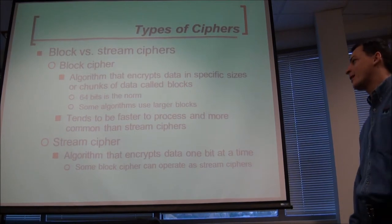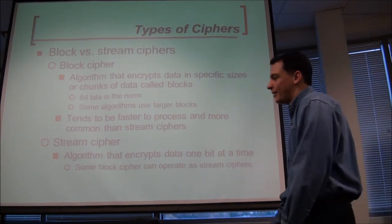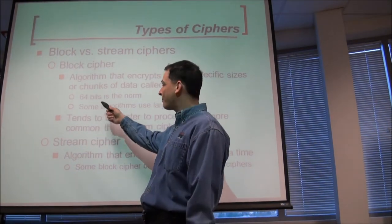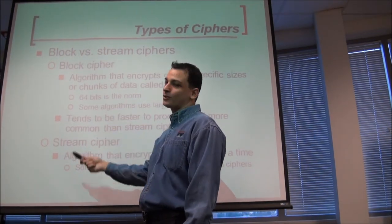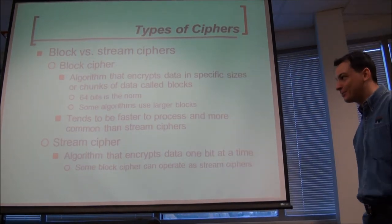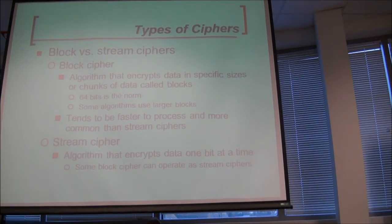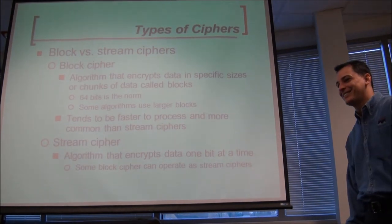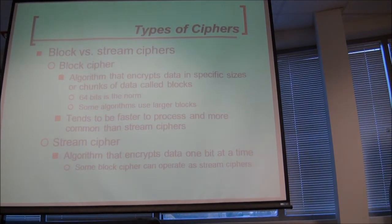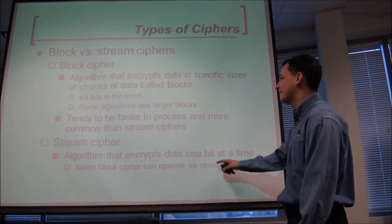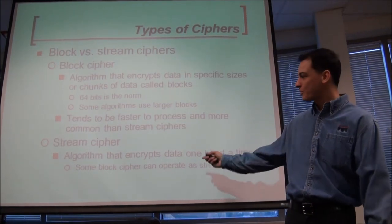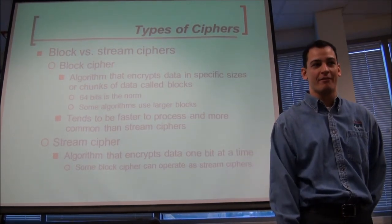Block ciphers operate on a larger increment — normally 64 bits, though some use 128. They tend to be much faster for bulk encryption. Stream ciphers process one bit or byte at a time. The key difference is the increment in which you work, and the conveyor belt is a great analogy for stream ciphers.